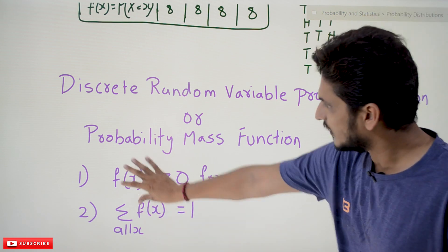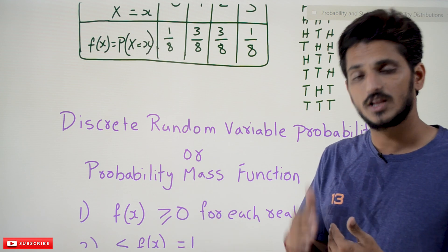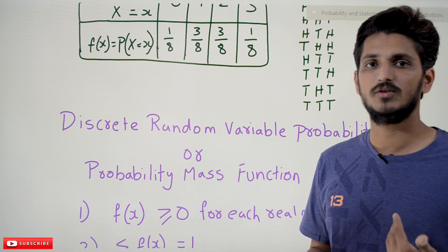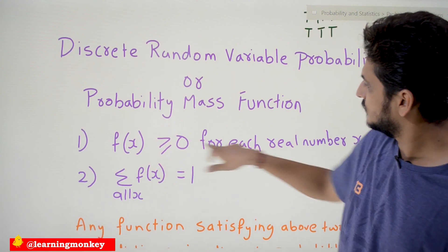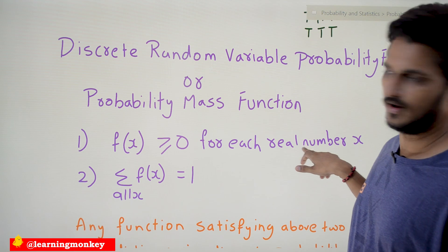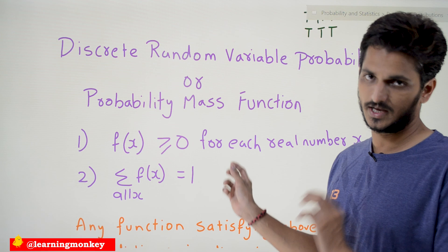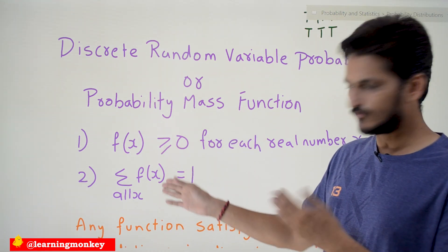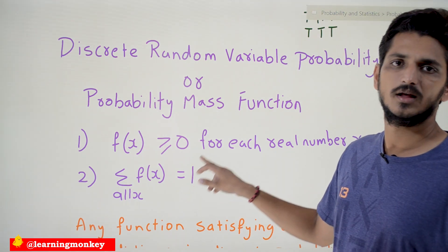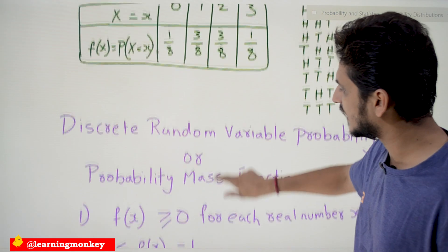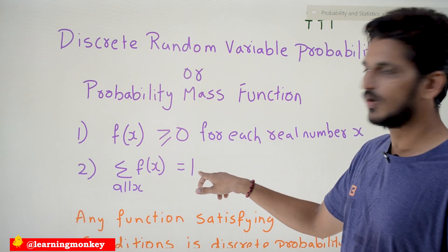Why must this condition be satisfied? Because this function provides probability values, and probability values will always be greater than or equal to zero — negative values are not accepted. That's why this condition is given. The second condition is: the summation over all x of f(x) should equal 1. Why should the summation equal 1?